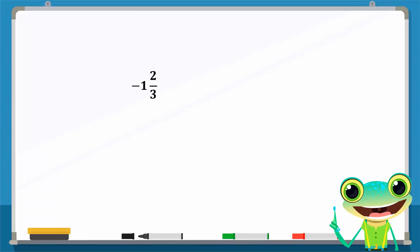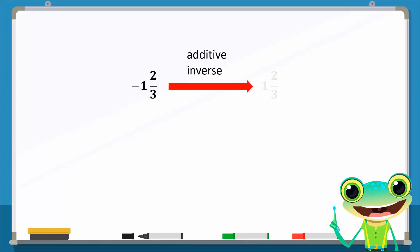The additive inverse of a negative rational number such as minus one whole two over three — note that the additive inverse of minus one whole two over three can also be written as five over three. This is because the mixed fraction of five over three is one whole two over three.